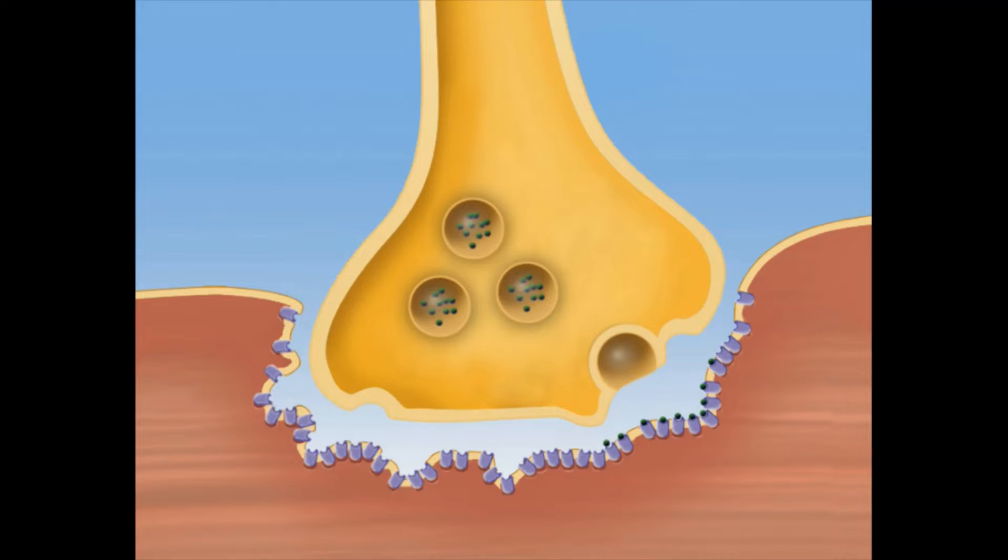If enough acetylcholine binds to the receptors, an action potential is generated and transmitted along the full length of the muscle fiber.